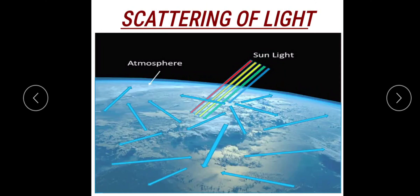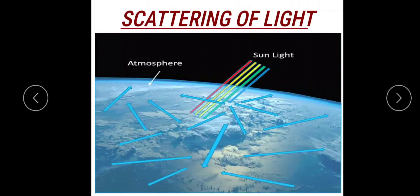A perfect example of scattering is why the sky appears blue during the daytime. When composite sunlight enters the earth's atmosphere, the particles scatter the light. High wavelength light like red easily passes through the atmosphere, but light having shorter wavelength like violet and blue is scattered more. Hence, to the observer, the sky appears blue.